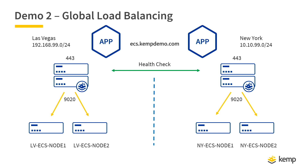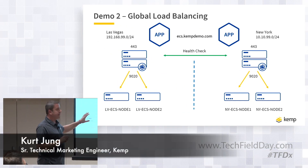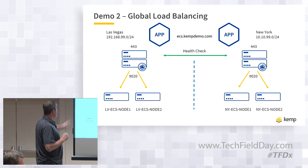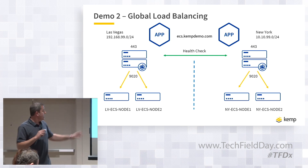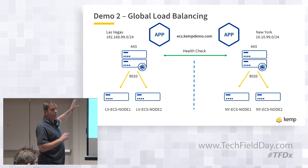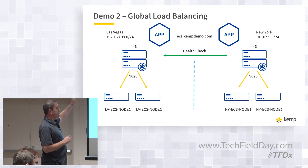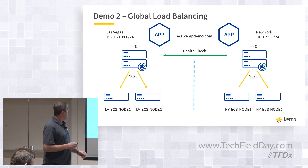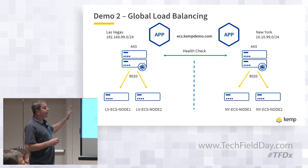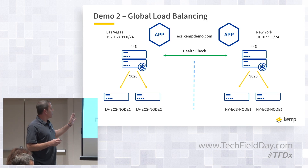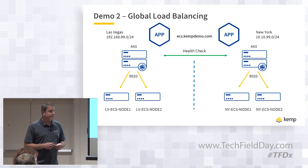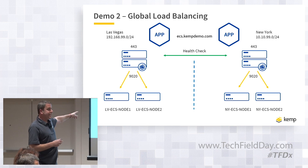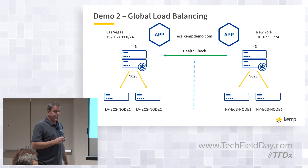We have about 10 minutes left. This environment is already set up, so we're just going to walk through what the configuration looks like on these two sites. We have Vegas on the 192-network and New York on the 10-dot network. The DNS servers are delegating to the load balancers for ecs.kemptdemo.com. We're doing location-based routing: the app in Vegas accesses storage in Vegas, and the app in New York accesses storage in New York.